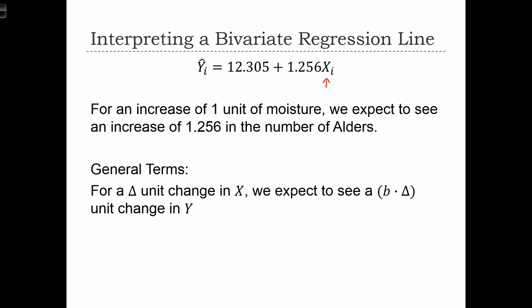Generally speaking, for a Δ unit change in x, so Δ could be 1 or Δ could be 10, we expect to see a b times Δ unit change in y. So if the moisture content increases by 10, we expect to see an increase of b times 10, which is 12.56 alders.